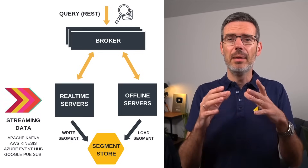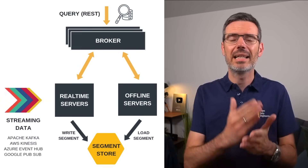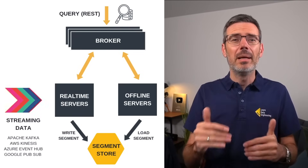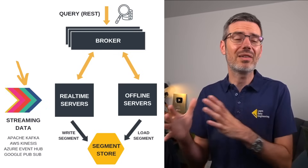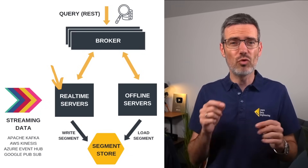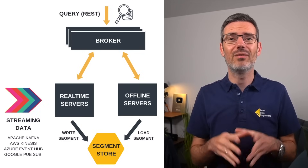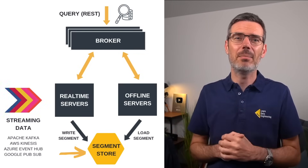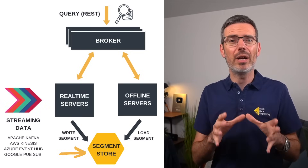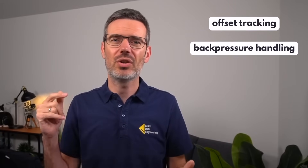Now let's walk through how data flows through the system, from ingestion to query execution. For real-time analytics, Pinot integrates directly with streaming platforms like Kafka, Kinesis, or PubSub. Pinot real-time servers subscribe to Kafka topics, events are held in memory, processed row by row, and are immediately available for querying via the consumption layer. In parallel, Pinot builds segments in the background, eventually sealing and indexing them for long-term storage. Queries don't wait for that step — the data is live and queryable from the moment it lands. Under the hood, Pinot handles offset tracking, backpressure, failure recovery, and more, so ingestion is reliable at scale.